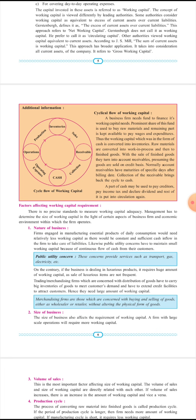Thus, the working capital which was in the form of cash is converted into inventory। जब working capital raw material खरीदने के लिए use किया जाएगा तो cash convert हो जाएगा inventory में। The raw material is converted into work-in-progress and then to finished products। जब इस raw material पे processing होगी तो ये work-in-progress और last में finished goods बन जाएगा। With the sale of finished goods, they turn into accounts receivable, presuming the goods are sold on credit basis।